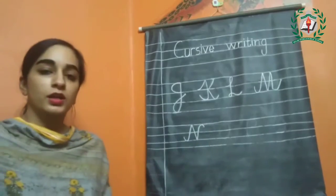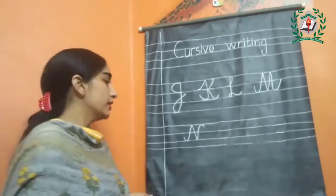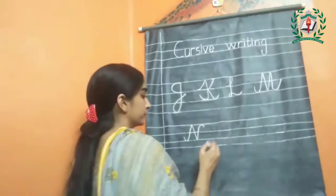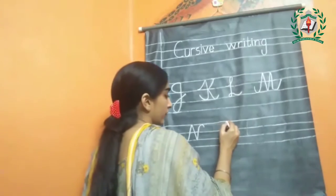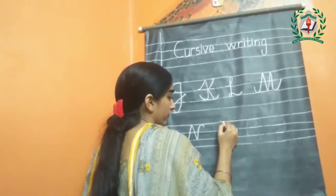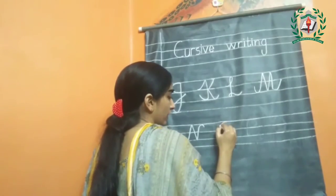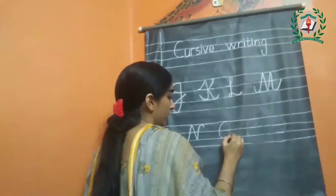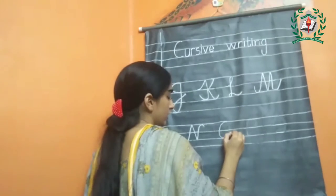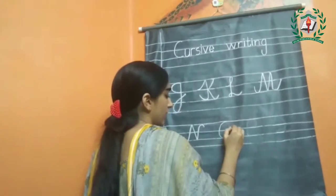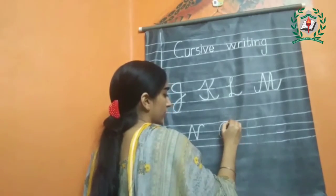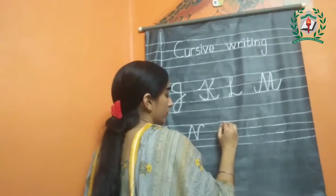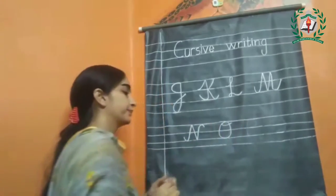Now the next letter is O. Make a circle starting from the upper line, touching to the baseline, followed by a loop at the head.